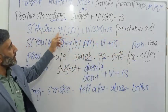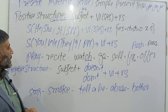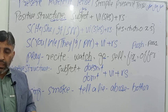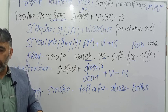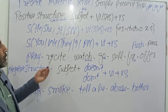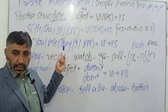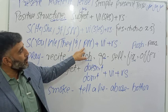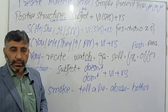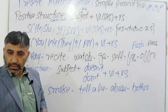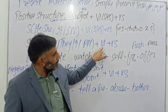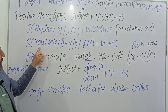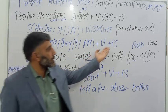When the subject is he, she, it, or a singular noun, add S or ES. But when the subject is you, we, they, I, or a plural noun — including two or more names together like 'Bilal and Salim' — we use only the bare verb first form, with neither S nor ES.